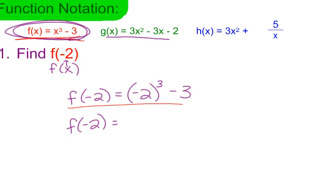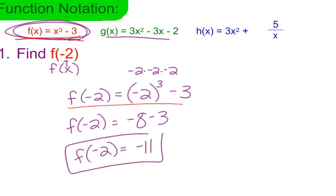So (-2) cubed is really -2 times -2 times -2, which is -8. When I take -8 minus 3, I would have -11. So f(-2) equals -11.